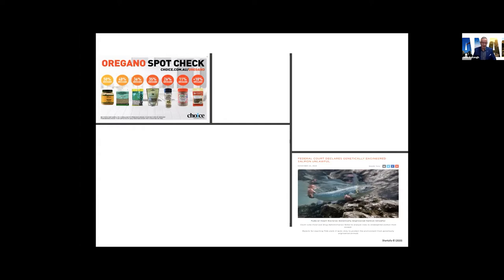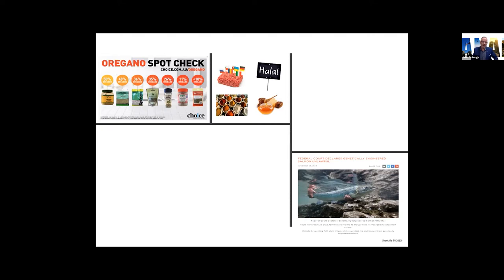A recent spot check on oregano found only one or two fraud cases — the industry seems to have cleaned itself up. They've now moved on to sage and are finding significant fraud there. On meat provenance and mixing meats: the University of Guelph tested sausages and found DNA from multiple animals in beef sausages. However, it is actually legal — under a certain percentage, you can include other animals in a mixture without declaring it on the ingredients label. Is that fair? I would say consumers should be concerned.